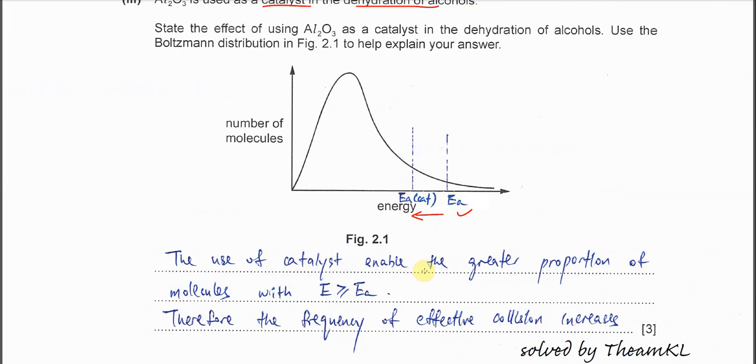The use of catalyst enables a greater proportion of molecules with energy same or more than EA. So now the new EA is here, so the numbers or the proportion is more. If without catalyst, the numbers is lesser. That's why the number of molecules that are able to react to form product is higher because it's including this part all together. Therefore the frequency of effective collision increases, which will give more products or increase the rate of reaction.